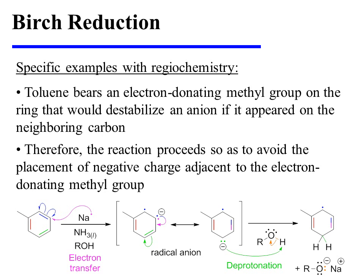Examining the mechanism will explain why that regiochemical outcome predominates. Toluene bears an electron donating methyl group, and this would destabilize an anion if that anion were to appear on the neighboring center. Consequently, the reaction proceeds so as to avoid the placement of negative charge adjacent to the electron donating methyl group.